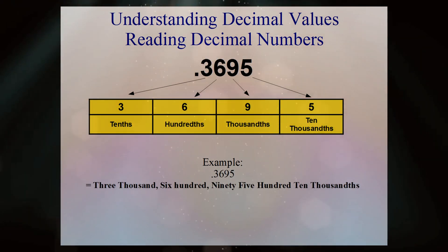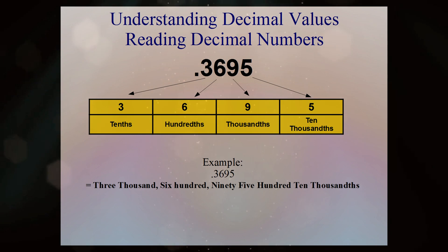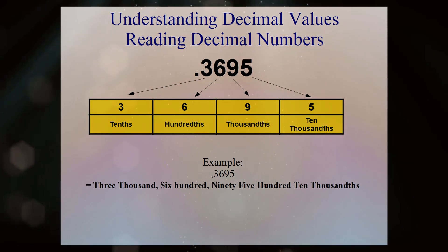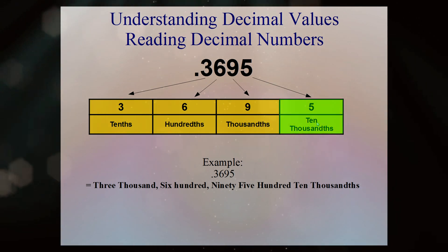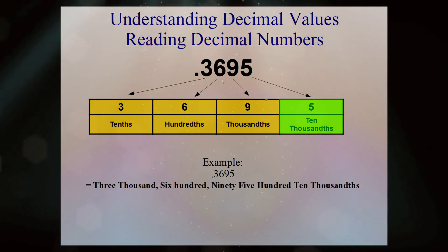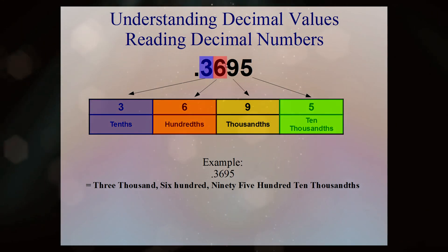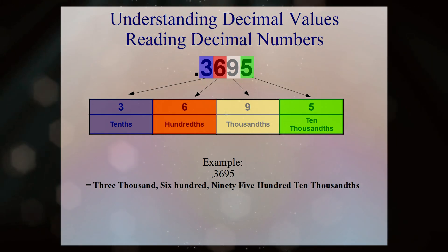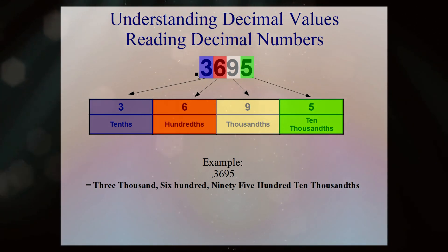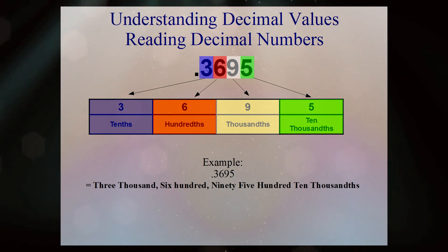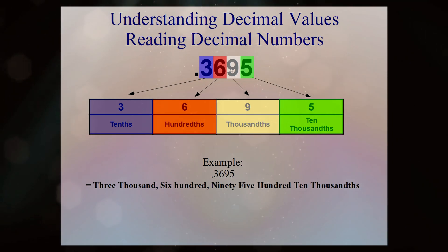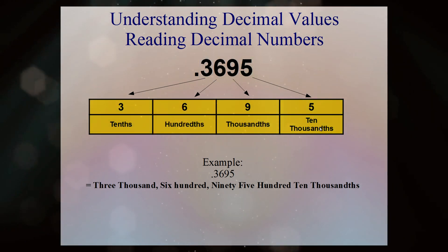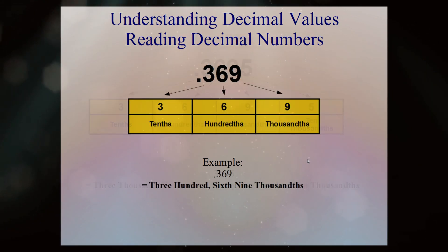In this next example, the first thing we notice is there are four digits to the right of the decimal place. If we look at our chart, we can see this will be a ten-thousandths number. The three is in the tens, the six is in the hundreds, the nine is in the thousands, and the five is in the ten-thousands place. So if we say this as a whole number and forget about the decimal, this is three thousand six hundred and ninety-five ten-thousandths.